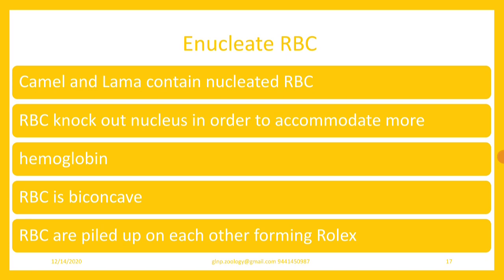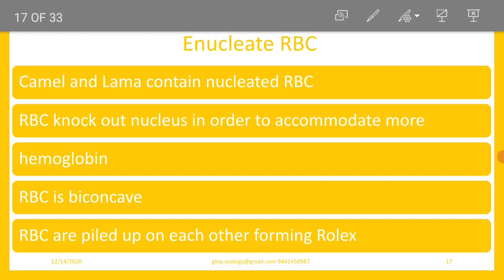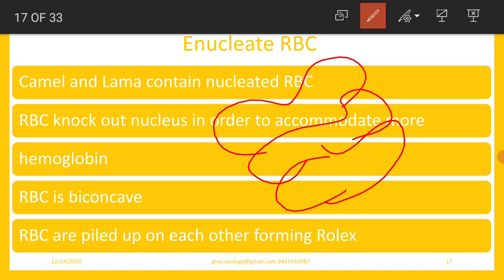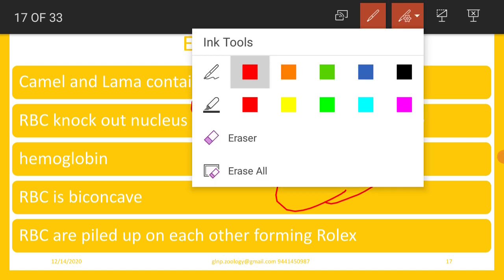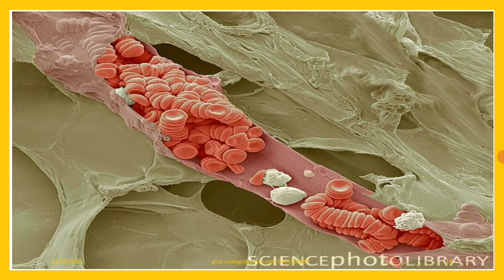RBCs are biconcave. RBCs are piled up on each other forming rouleaux — this is the most important characteristic feature of mammalian RBCs. They pile up one over another like coins, and this arrangement is called rouleaux. The formation of rouleaux facilitates the accommodation of more RBCs in lesser space.